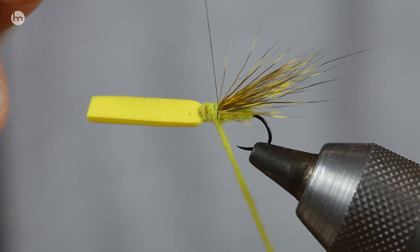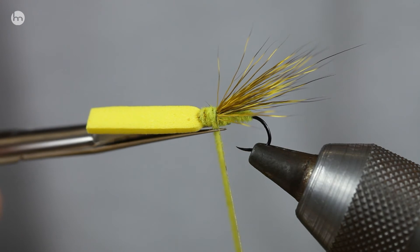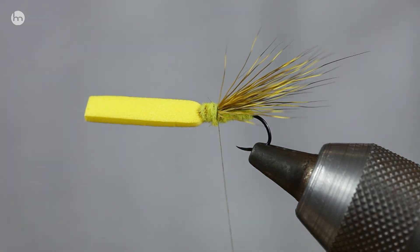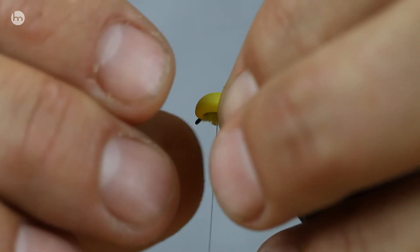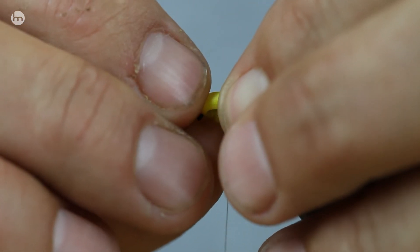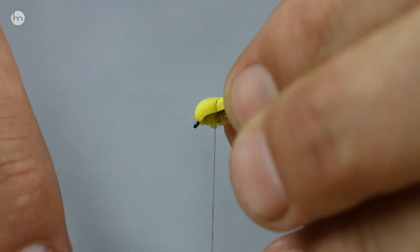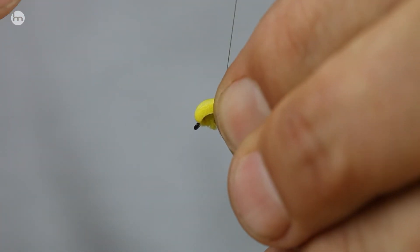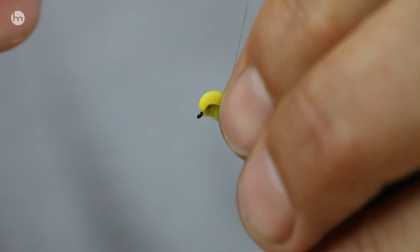And then bring the foam back over. And then depending on how much of a balloon you want, pull it tight or slacken it off. Again, if you're fishing bigger rivers, bigger current, have a bit more of a balloon there because it floats better.